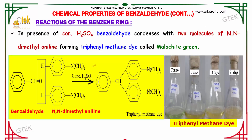In the presence of concentrated sulfuric acid, benzaldehyde condenses with two molecules of N,N-dimethylaniline, forming the triphenylmethane dye called malachite green. So benzaldehyde reacted with N,N-dimethylaniline in the presence of concentrated sulfuric acid gives the triphenylmethane dye shown here.